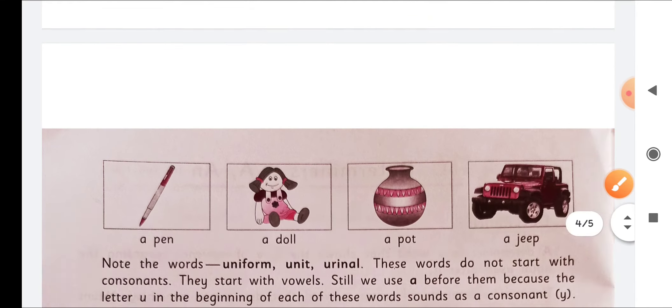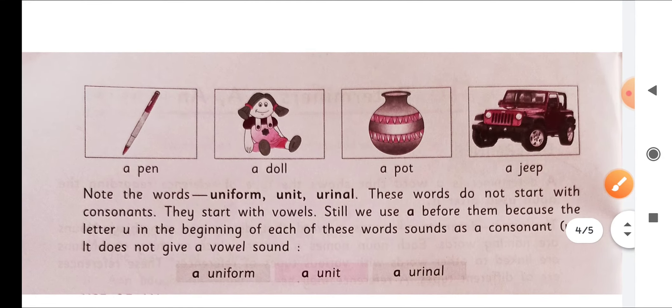Like for example, a pen. P is consonant so we use a. A doll. So D is a consonant so we used a. A pot. P is a consonant so we used a. And a jeep. So again J is a consonant so we are using a before jeep.